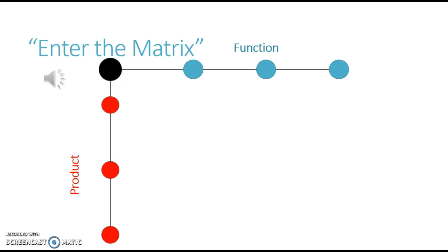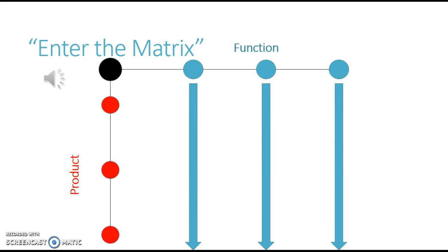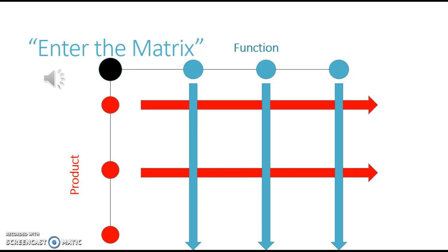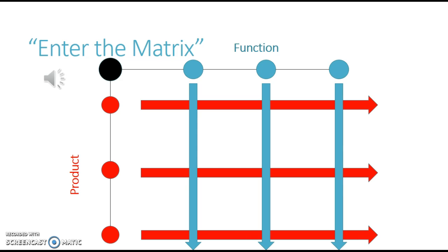As you can see here, in a matrix structure we have the traditional vertical, functional reporting structure going downward, and introducing a horizontal linkage with product or project service managers. This allows the product or project service managers to reach across each siloed function to deploy or access the resources necessary to deliver the product.